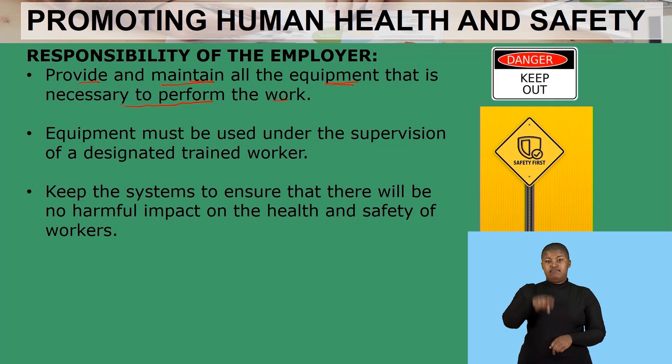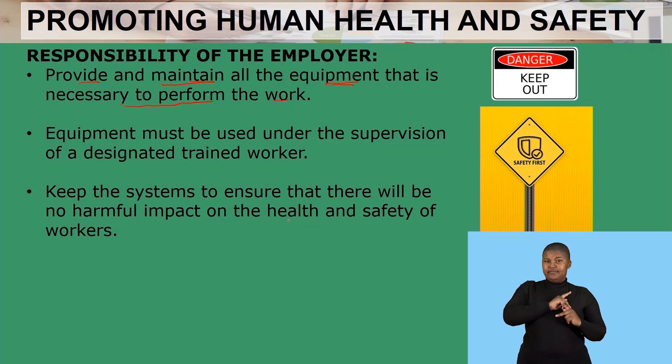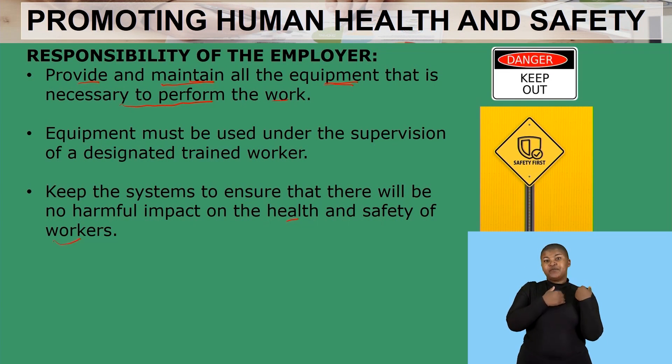Another way is to keep systems to ensure there will be no harmful impact on the health and safety of workers. This means machines and whatever is being used, together with raw materials — because some raw materials might be chemicals that are very strong for employees — should be kept in a safe place. Hence we are talking about a system, which is the way the business would be doing things.